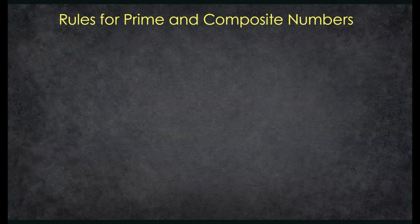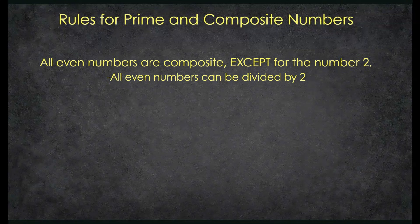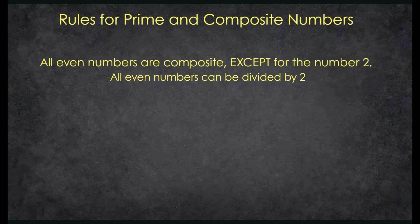Now that we know the difference between prime and composite, let's take a look at some rules to help us determine if a number is prime or composite a little bit quicker. Our first rule: all even numbers are composite except for the number 2. The reason why all even numbers are composite is because they can all be divided by 2 — you can multiply 2 times something to get that number. The only rule breaker is the number 2, because the only way to make 2 is 1 times 2. So 2 is prime, but it is the only even number we consider prime.